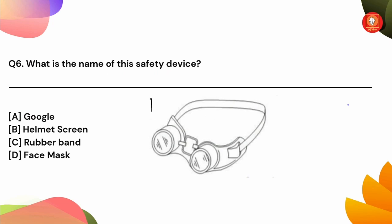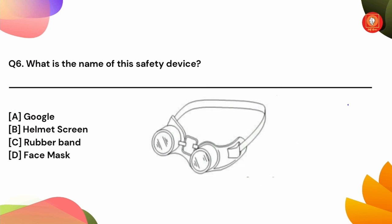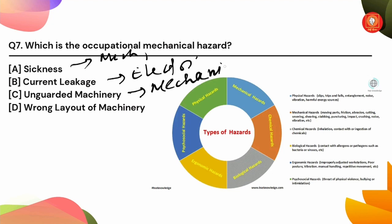Question number 6: what is the name of this safety device? It is a mechanical hazard related to your vehicle. You have to use the traction as well — you can control your vehicle from it. If you have an injury, that is a mechanical hazard. The wrong layout of machinery is an ergonomic hazard. Option C is a mechanical hazard.